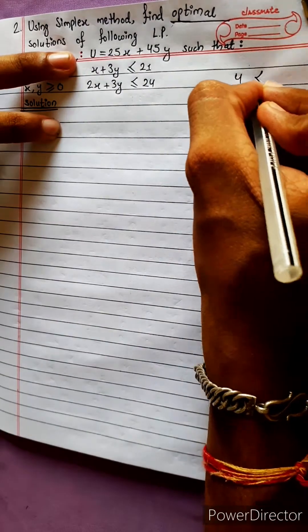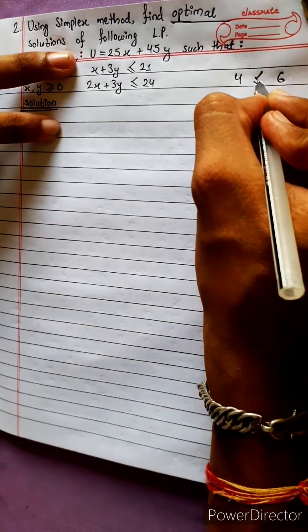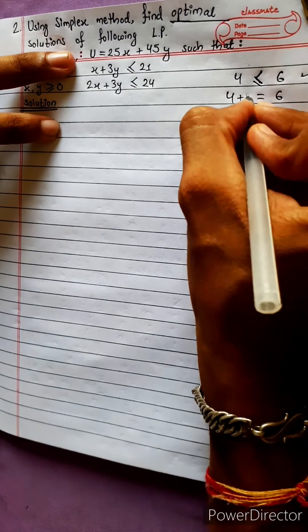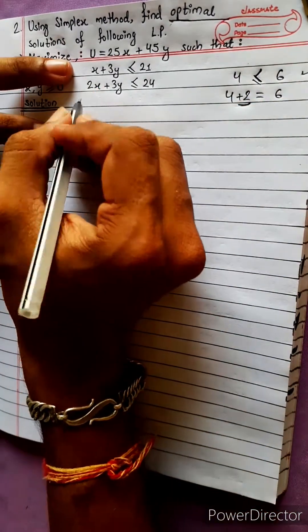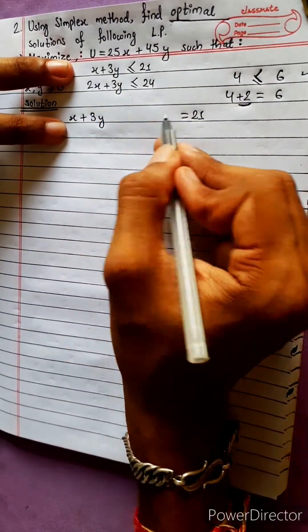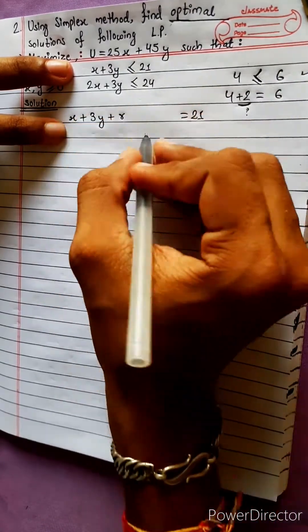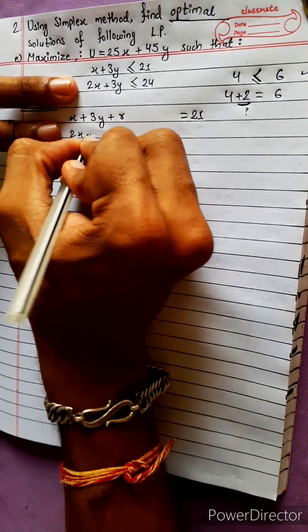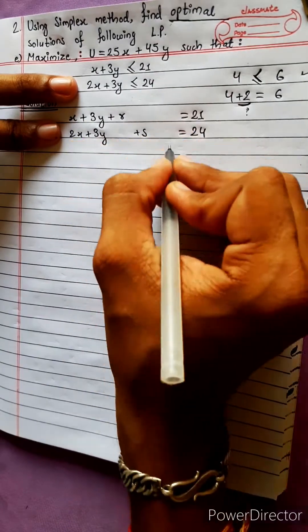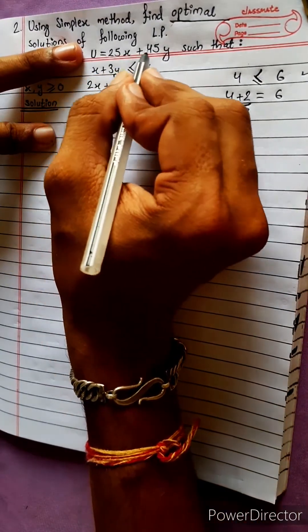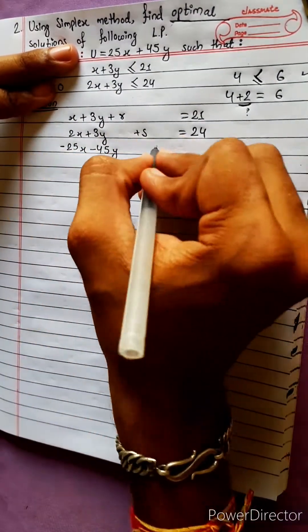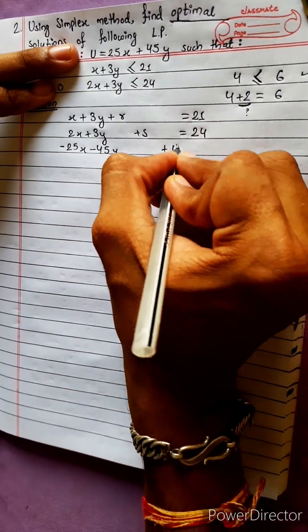The constraints are: x + 3y ≤ 21, and 2x + 3y ≤ 24. The objective function is: minus 25x minus 45y plus u is equal to 0. This is the standard form of the linear programming problem.